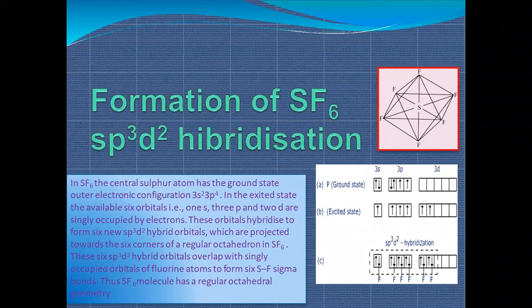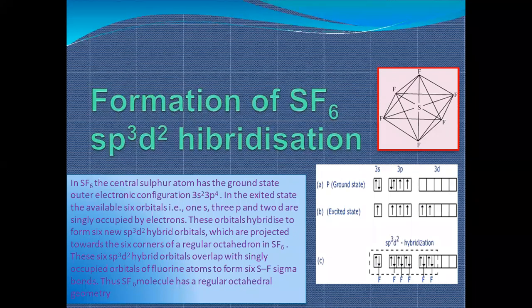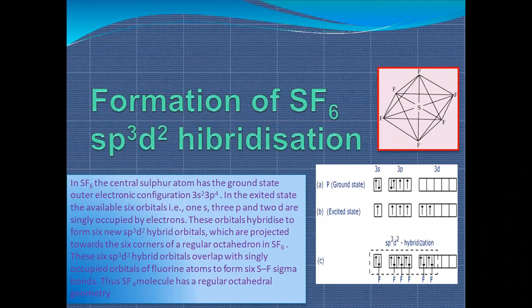In the excited state, six orbitals (one s, three p, and two d) are singly occupied and hybridize to form six new sp3d2 hybrid orbitals projected towards the six corners of a regular octahedron. These six sp3d2 hybrid orbitals overlap with the singly occupied orbitals of fluorine atoms to form six S-F sigma bonds, since each fluorine combines with a single bond only. Thus, SF6 has a regular octahedral geometry.